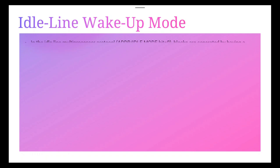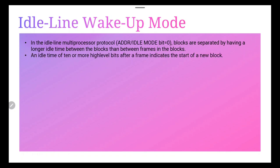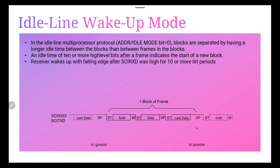In idle line mode, the address/idle mode bit will be 0. Blocks are separated by having a longer idle time between blocks than between frames within a block. An idle time of 10 or more high-level bits after a frame indicates the start of a new block. So this is a complete frame — this is one block, with a start point and a stop point — and the idle line will be more than 10 bits long in idle line wakeup mode.